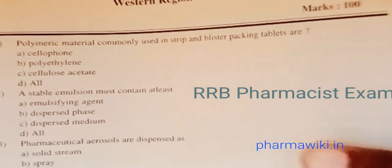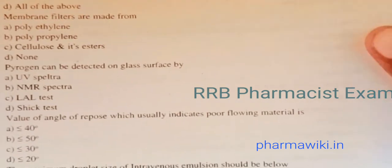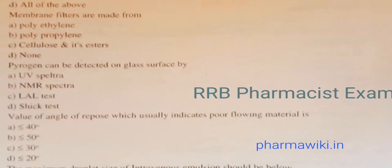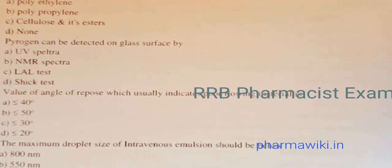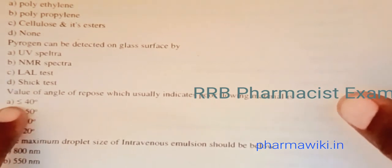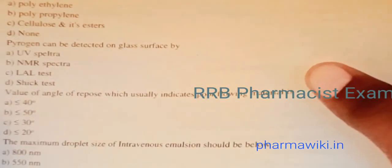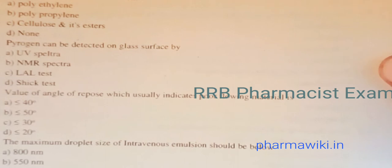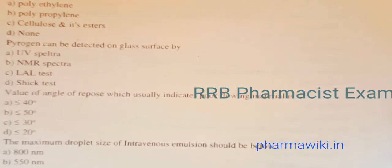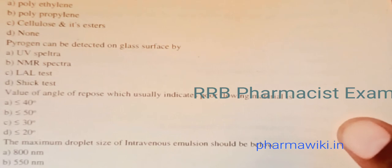Question 6: The value of angle of repose which usually indicates poor flowing material is — the answer is A, less than or equal to 40 degrees. A value of angle of repose less than or equal to 40 degrees usually indicates poor flowing material.